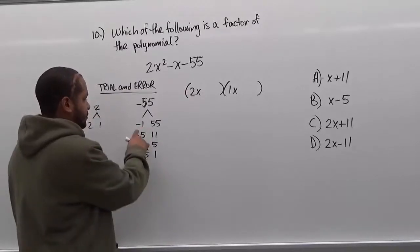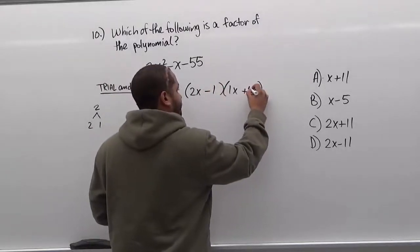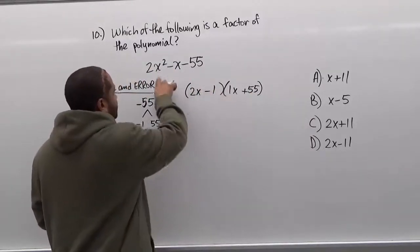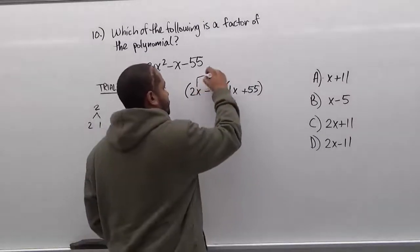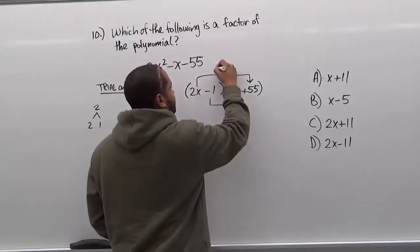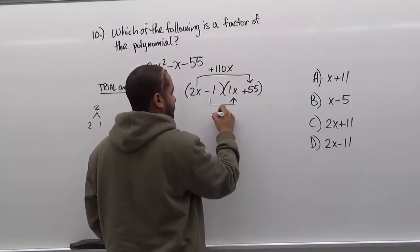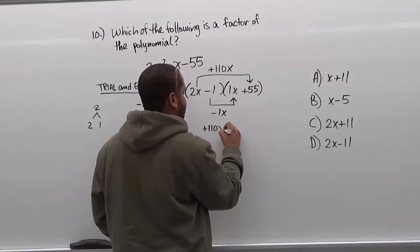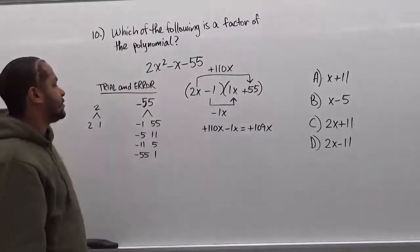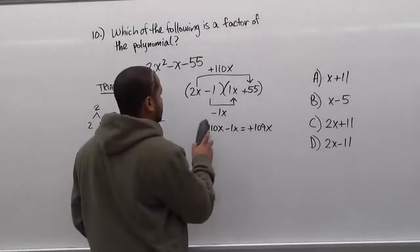We're going to start with the first two set of factors here, negative 1 and positive 55, and insert them as the corresponding pairs. 55 times negative 1 gives us the last term. And 2x times 1x gives us the first term. Now we're just worried about the middle term. So we're going to take the product of 2x and 55 and negative 1 and 1x and add them up. So 2x times 55 is 110x's. On the bottom we have negative 1 and positive 1x multiplying and we get negative 1x. The sum of 110x's and negative 1x's is actually just 109x's. And this isn't the term that we have. So we know that this isn't the solution.